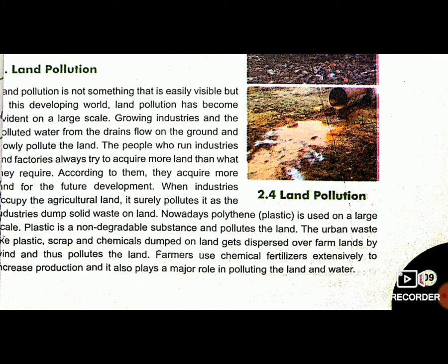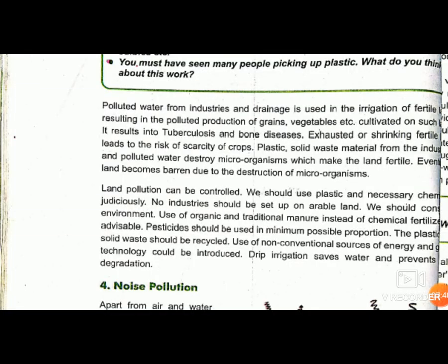Wind carries plastic, scraps and other chemicals towards other land and pollutes them as well. Farmers use chemical fertilizers to increase production, and this also plays a major role in polluting the land and water. Agricultural products produced using chemical fertilizers also affect human life and make them ill. Polluted water from industries and drainage is used in irrigation of fertile land, resulting in polluted production of grains and vegetables cultivated on such land.